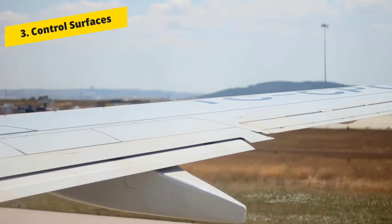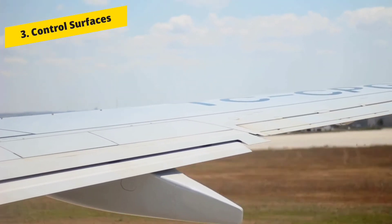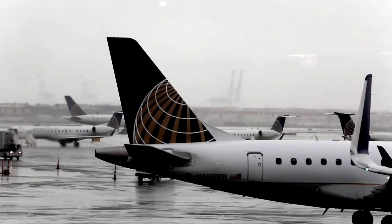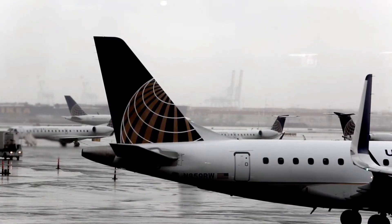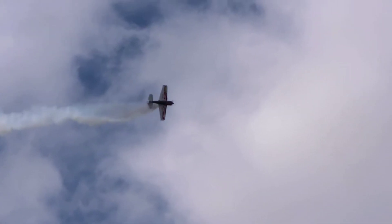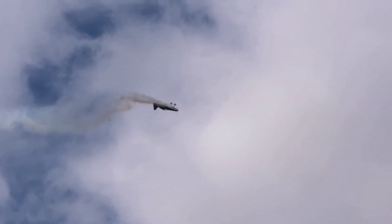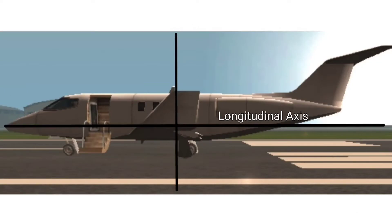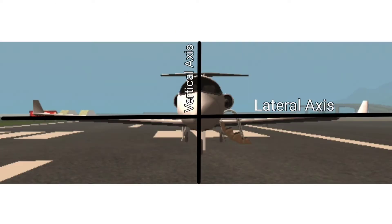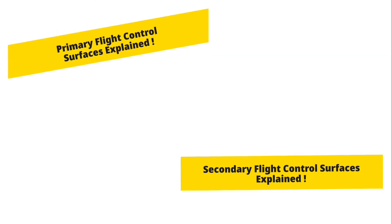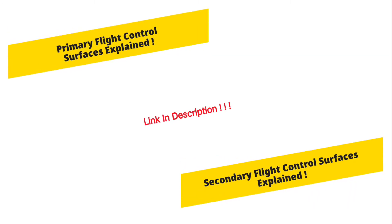Control surfaces. These are present on the wings and tail section of an aircraft. They help in controlling the aircraft to the desired direction in these three axes of rotation: longitudinal axis, vertical axis, and lateral axis. There are primary and secondary control surfaces, which are discussed in another video.